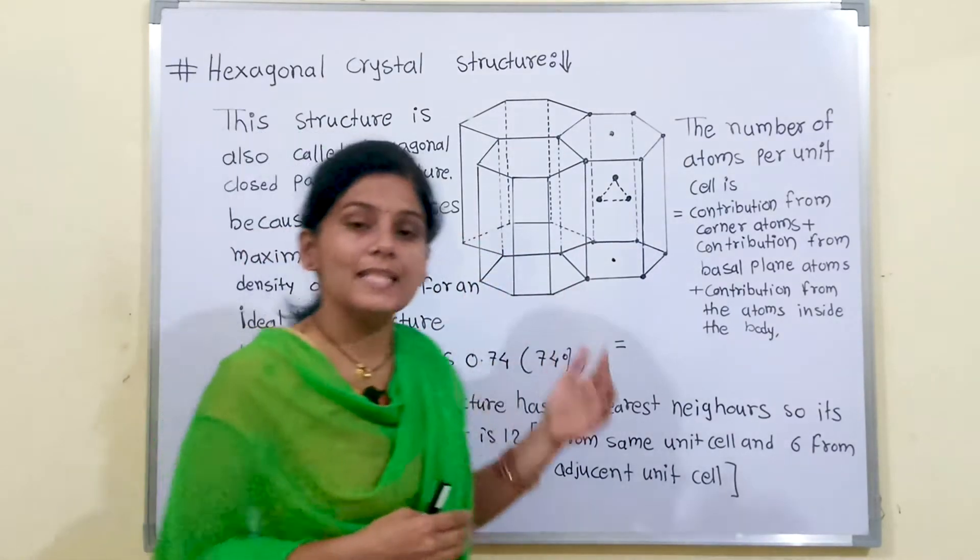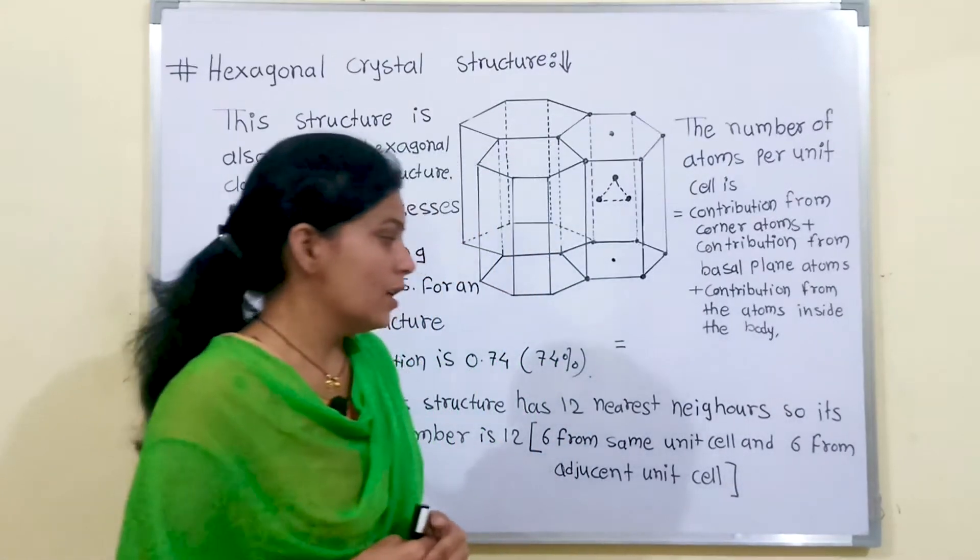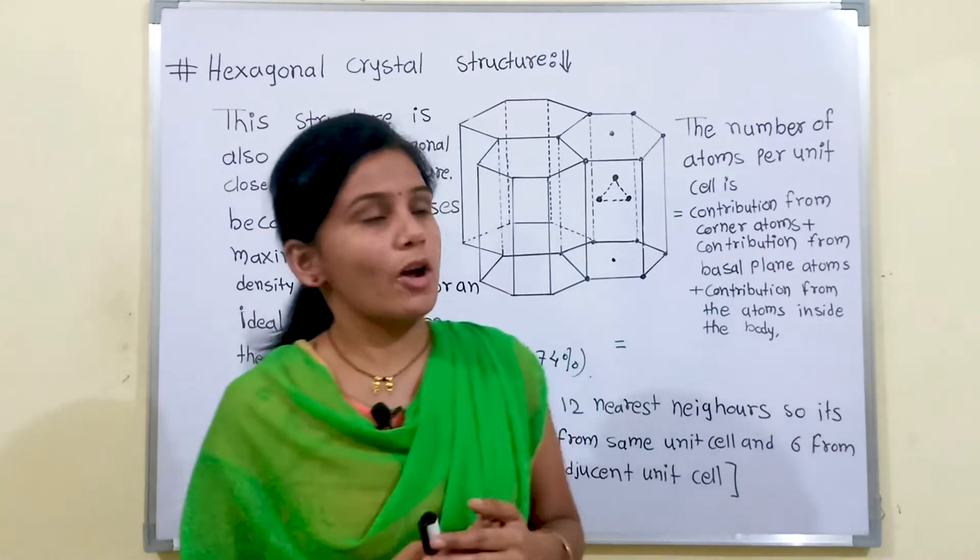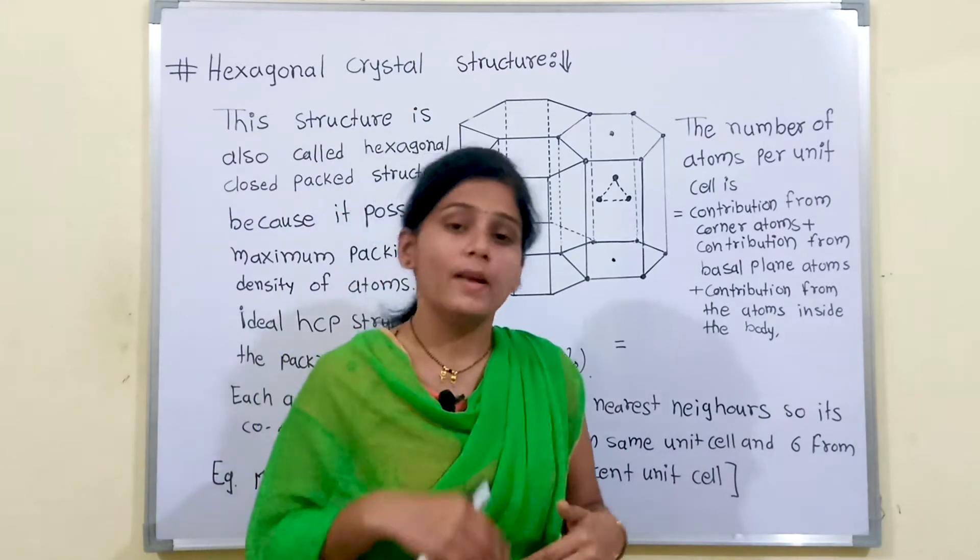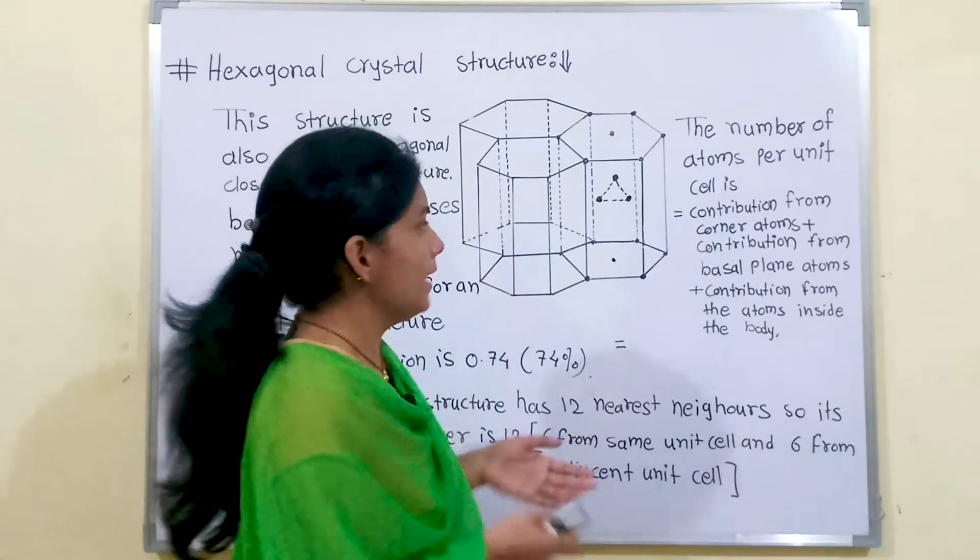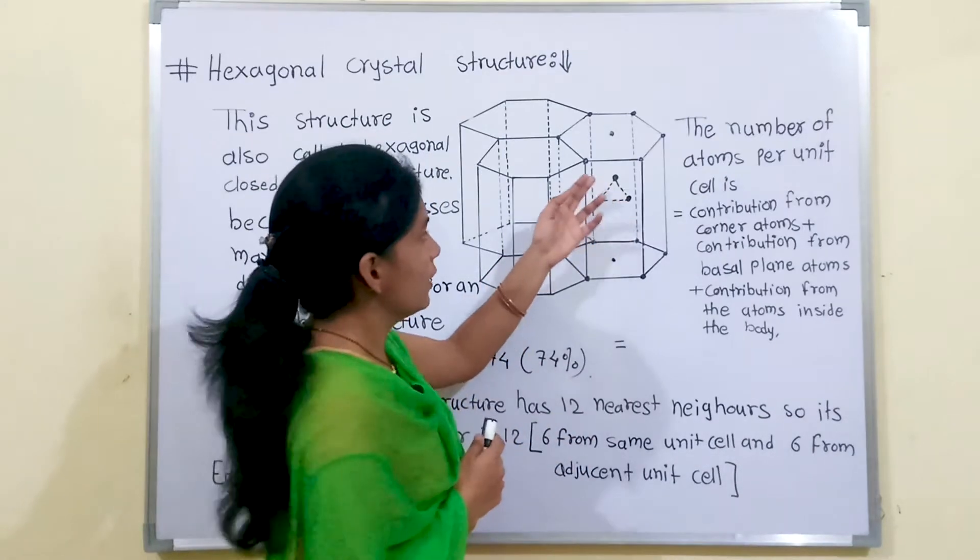Each atom in this structure has 12 nearest neighbors, so its coordination number is 12. 6 from same unit cell and 6 from adjacent unit cell.